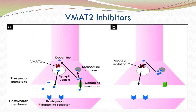This is a pictorial representation of how VMAT2 inhibitors function. When functioning normally, dopamine enters the synaptic vesicle via the VMAT2 and then it is released into the synapse. When VMAT2 inhibitors block the VMAT2, dopamine is no longer able to enter the synaptic vesicle, and so there is a reduction or lack of dopamine release into the synapse.